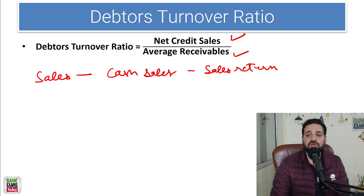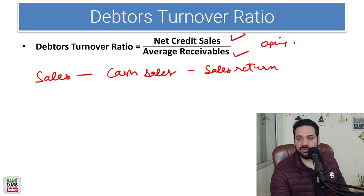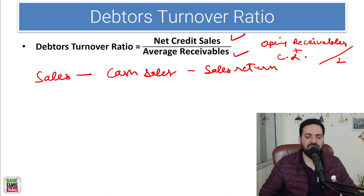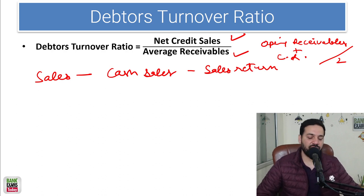Average receivables means the debtors at the beginning — opening receivables plus closing receivables divided by two. In the same way we calculated the average inventory: opening plus closing divided by two. That is how we calculate the debtor turnover ratio.